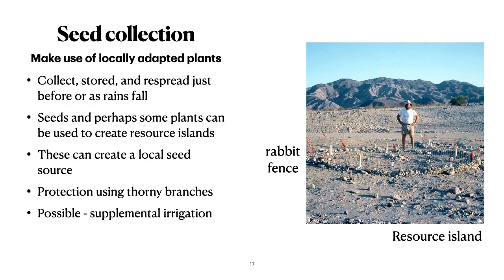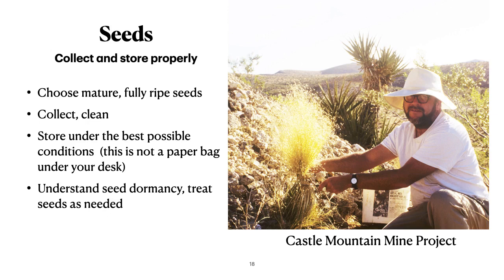Seed collection is really a low cost and often valuable part of natural regeneration. The key is to collect mature, fully ripe seeds, to collect and clean them, get all the bugs out so they're not eaten while storing, and to store under the best possible conditions. As my wife reminds me, this is not a paper bag under my desk. Understanding seed dormancy is critical, and seeds may have to be treated so they have a better chance to sprout. Some hard-seeded plants can be scarified with sandpaper, a chipper, or even just a knife to make a slit so water can get in and get the seed started. In the picture, I'm collecting Indian rice grass from an area of the Mojave Desert.